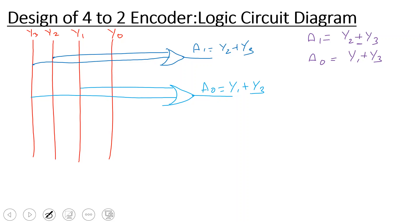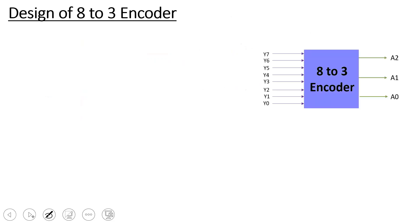Similarly, this is the 8-to-3 encoder, also called octal-to-binary. There are 8 inputs — Y7 to Y0 — and 3 outputs: A2, A1, A0. When Y0 is activated, output is 0, 0, 0. When Y1 is activated, output is 0, 0, 1. When Y2 is activated, output is 0, 1, 0. When Y7 is activated, output is 1, 1, 1.